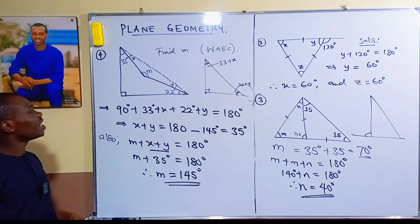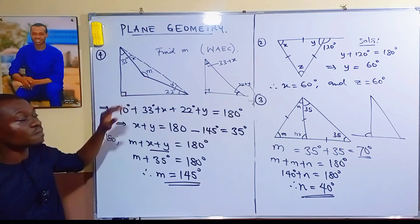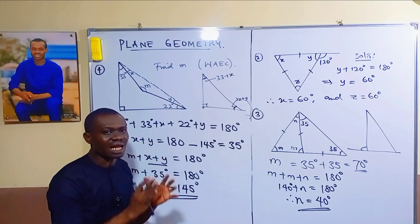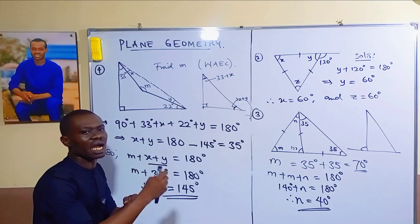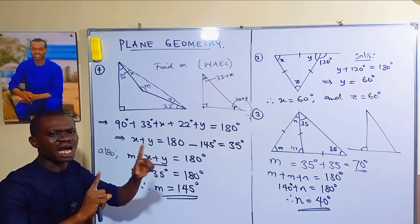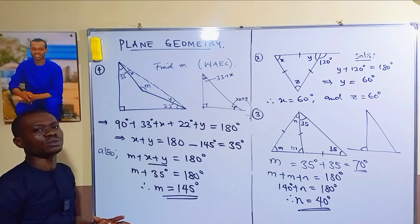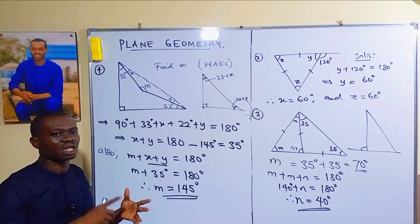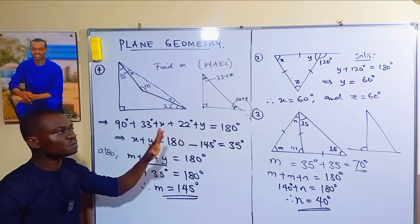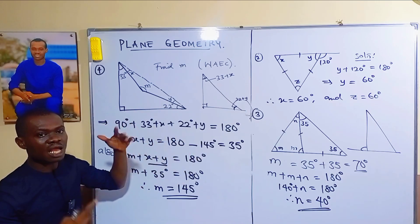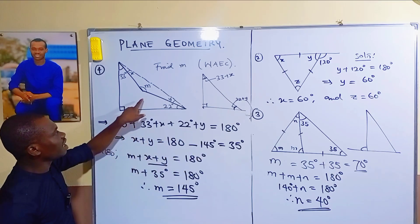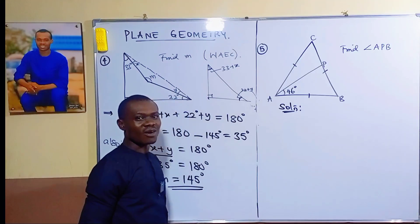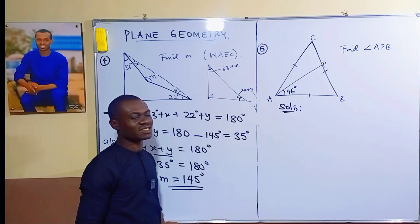The key insight is to understand the theorems and then examine the diagram to decide how to apply them. We've now used angles on a straight line, angles at a point, sum of angles in a triangle, and the external angle theorem. You could also apply the external angle theorem to this last diagram and arrive at the same answer.